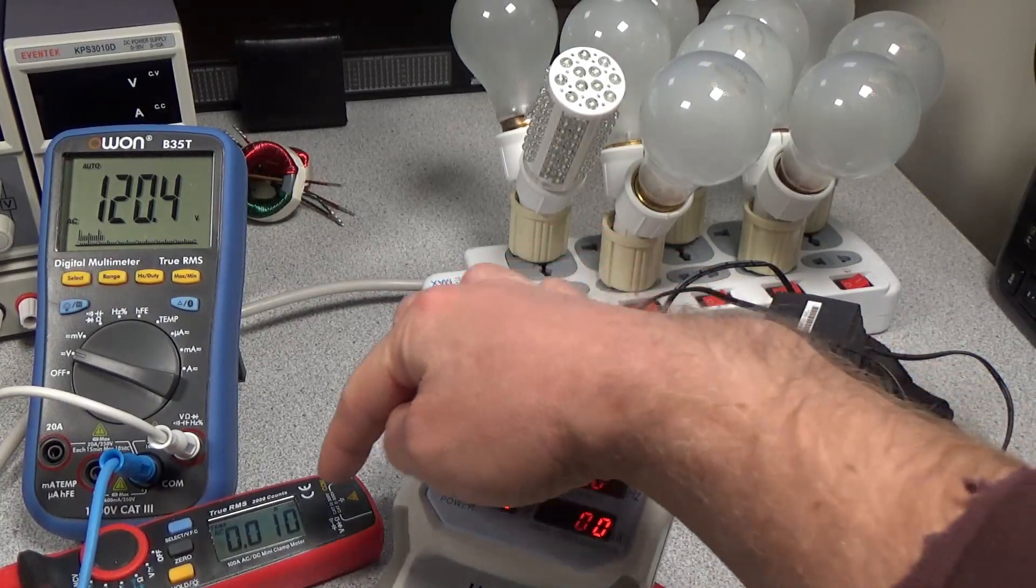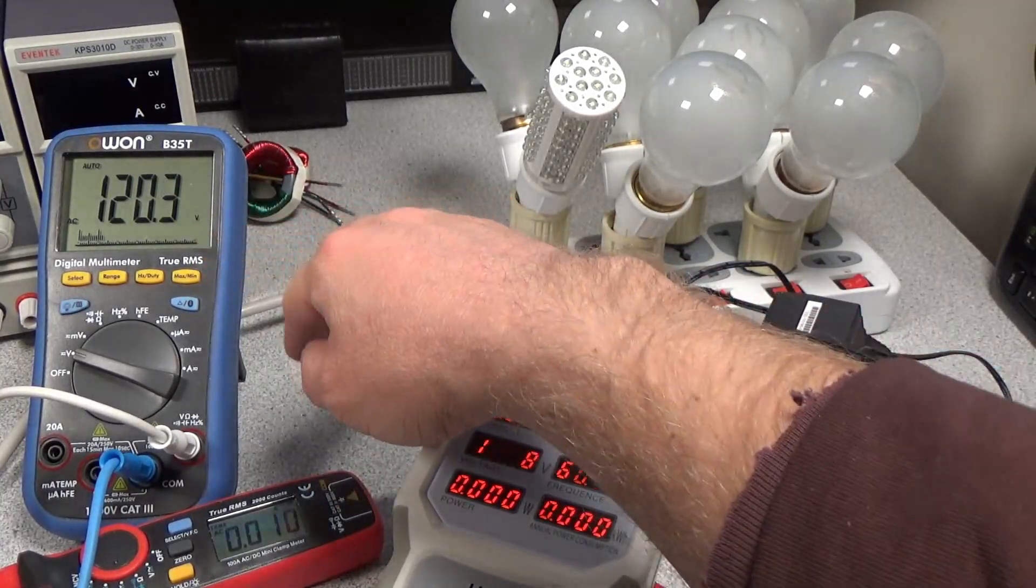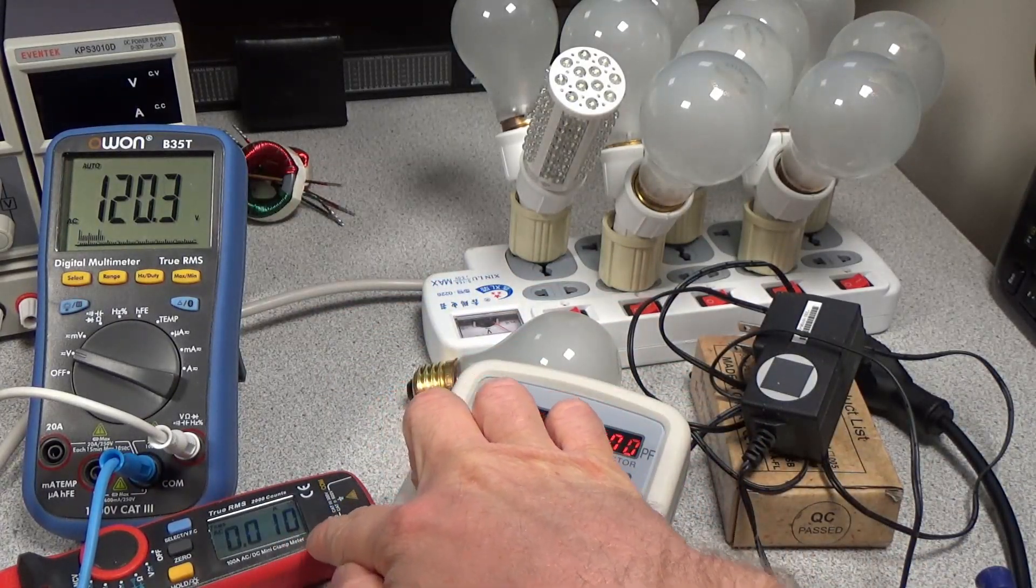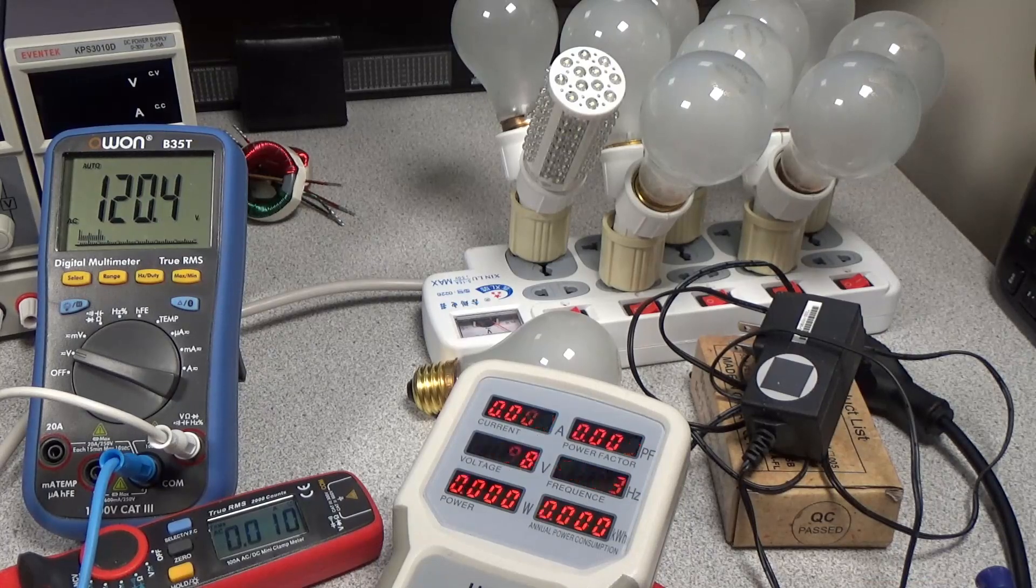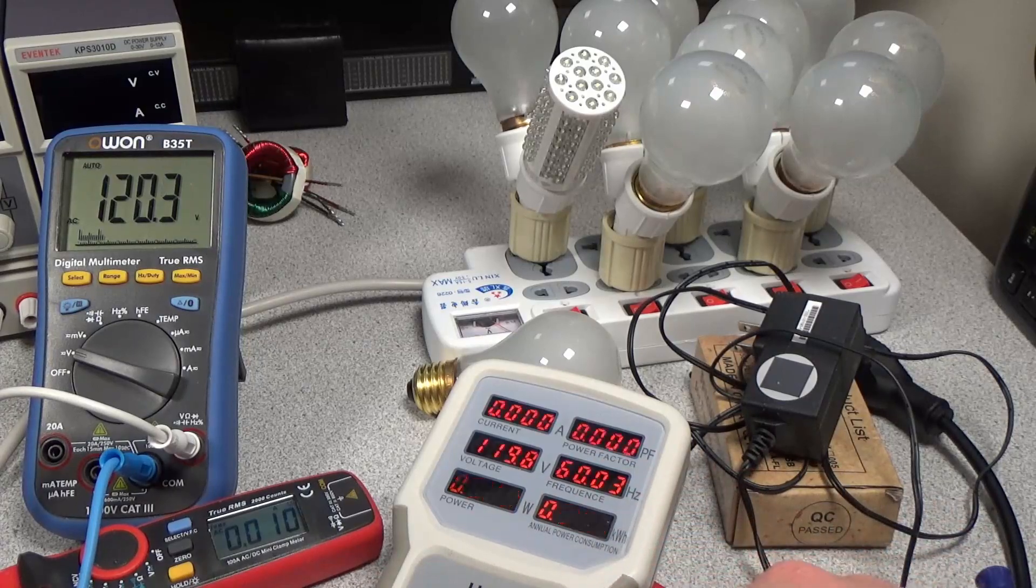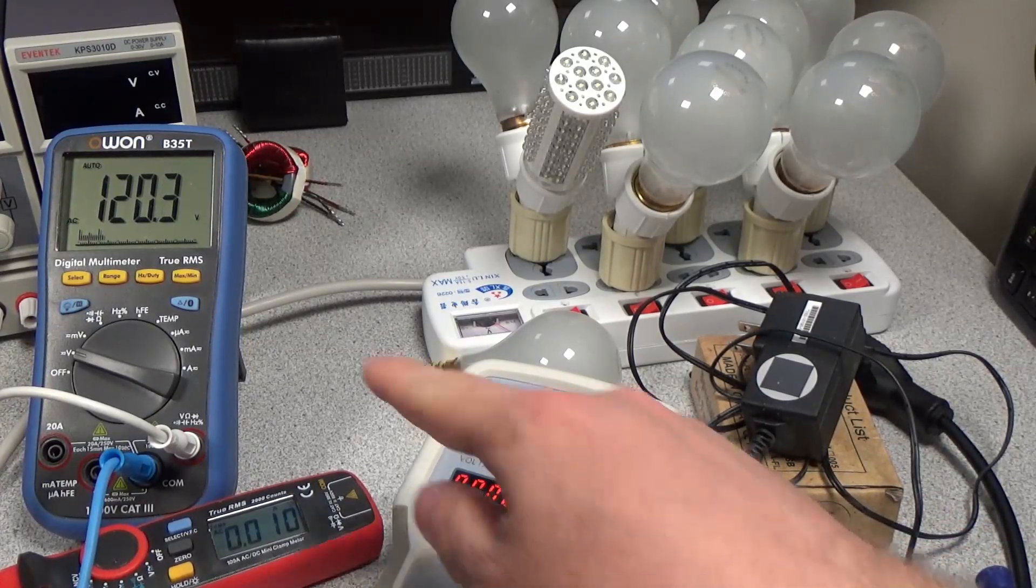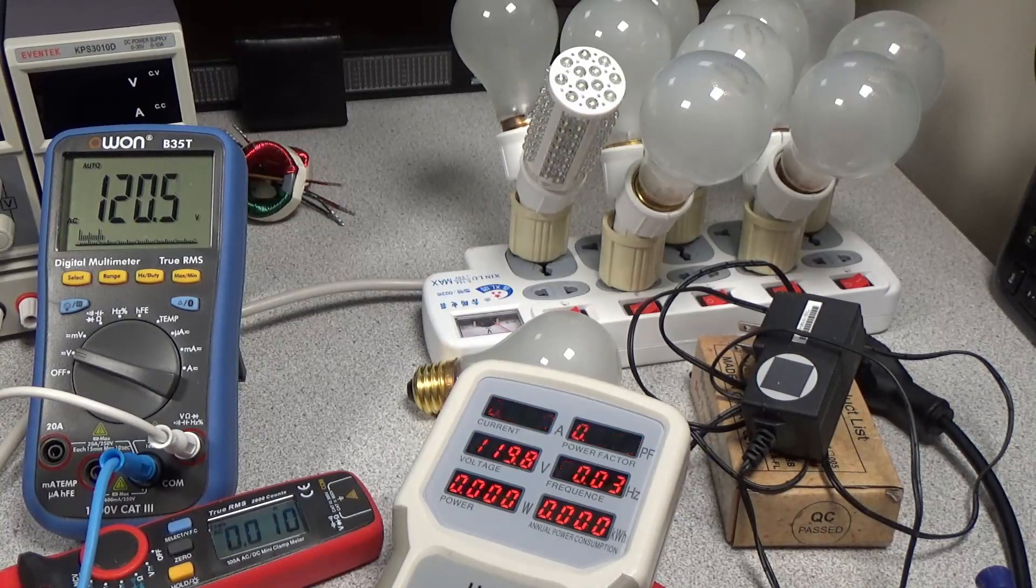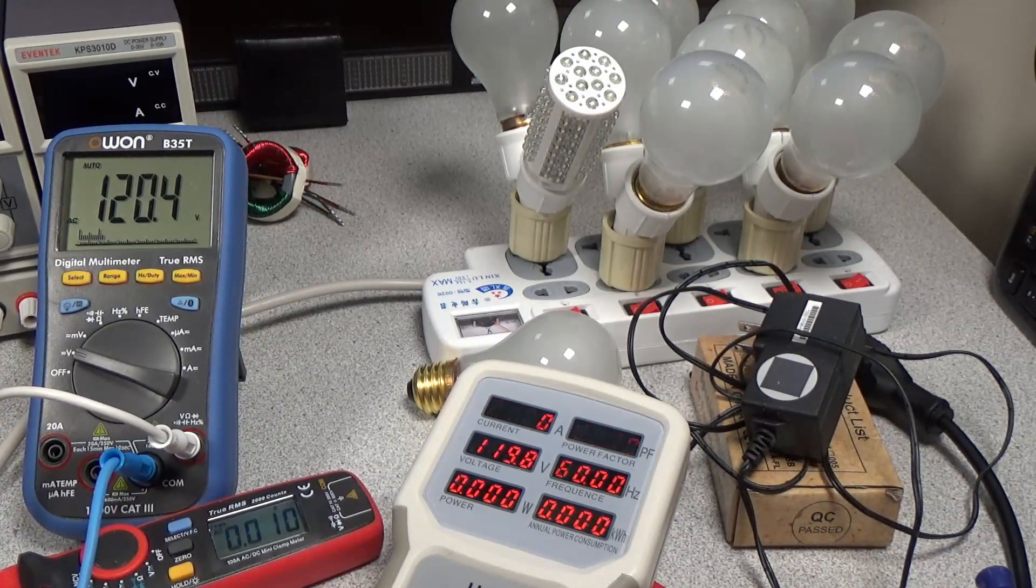What I have hooked up here is just a current tap and a voltage tap, so right now we're actually measuring the current that this meter is using down here, 0.01 amps, so 10 milliamps. The voltage over here is the tap of the voltage going into this meter as well, and we can see they're not quite perfect with each other, but they're pretty close, it's not too bad.